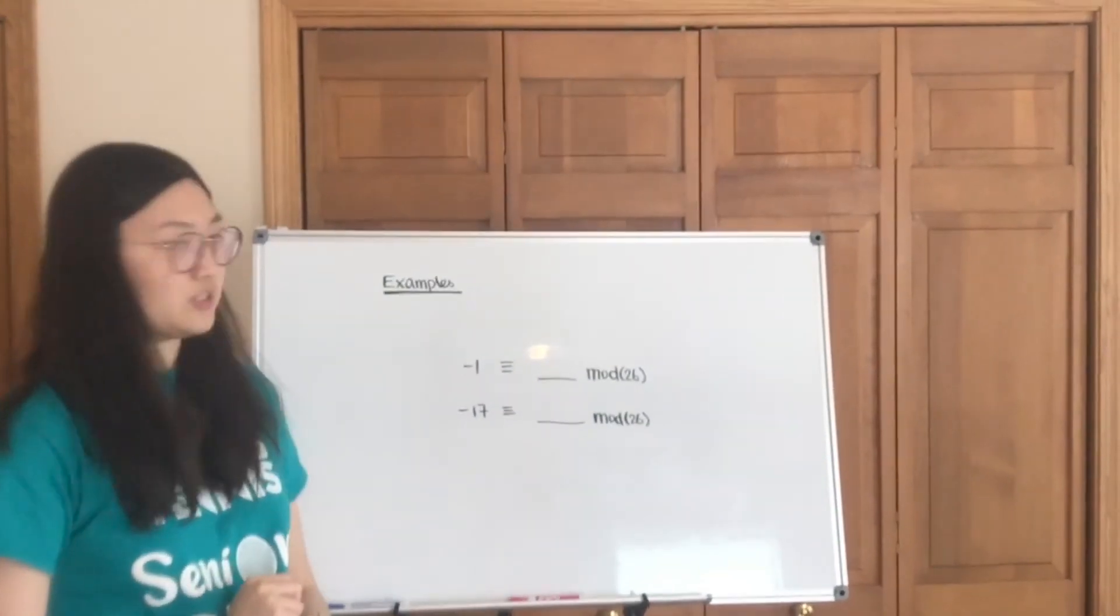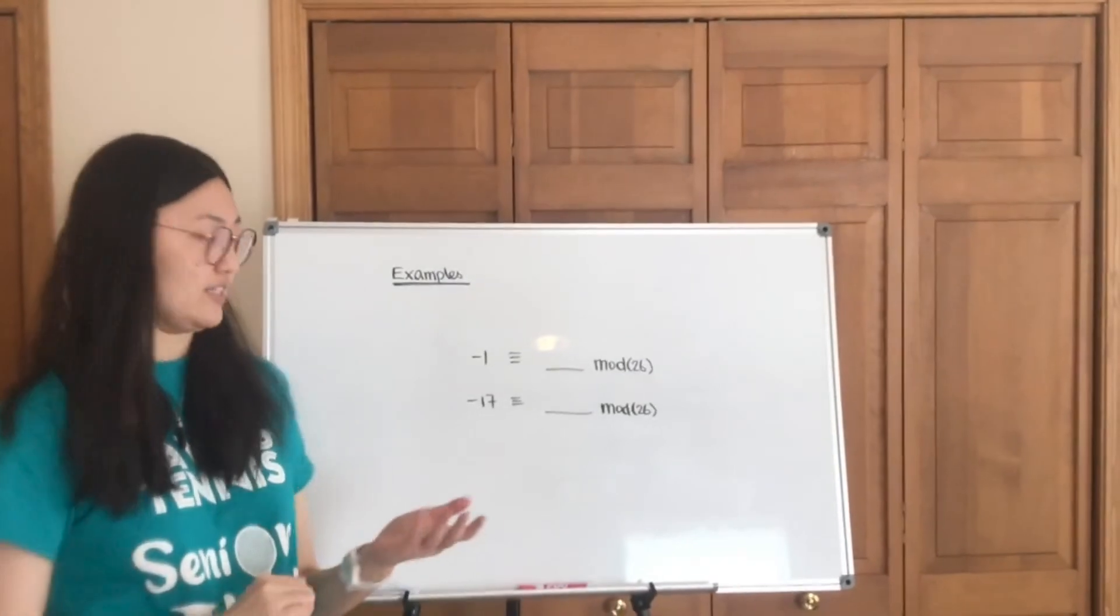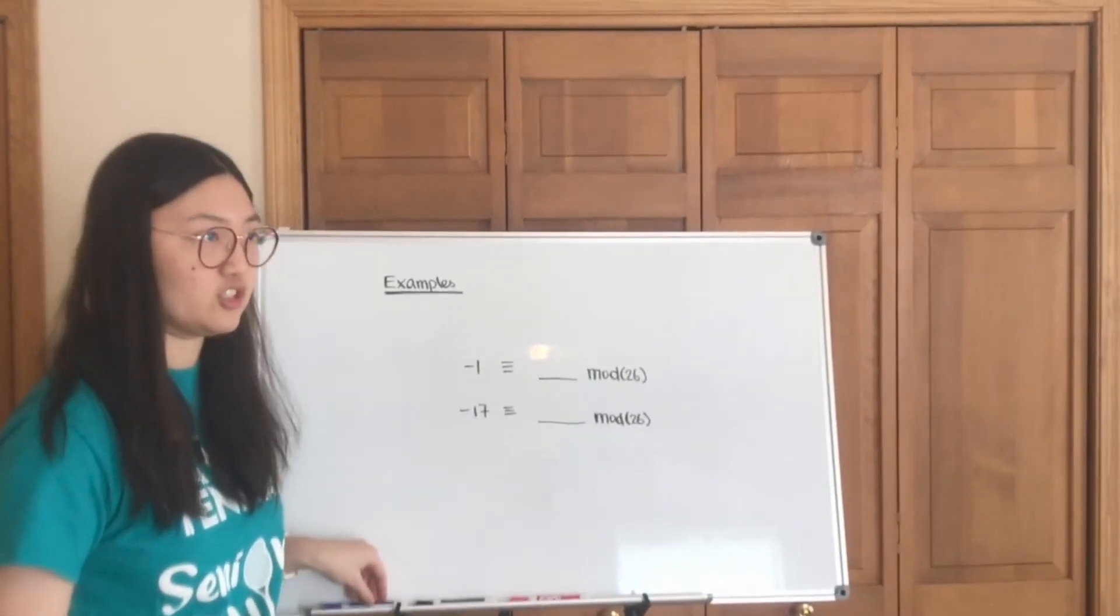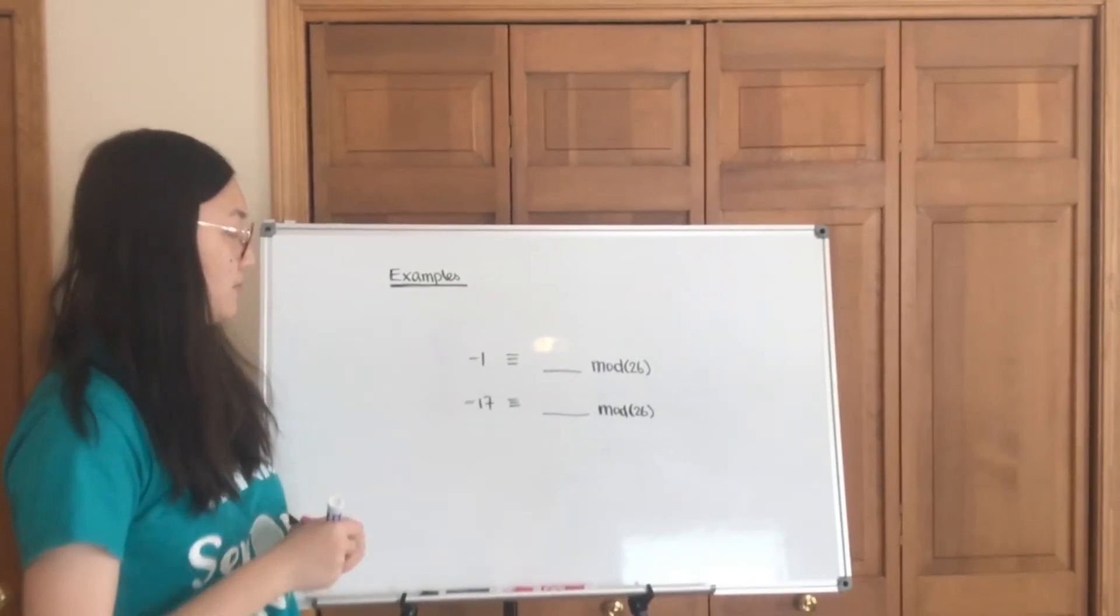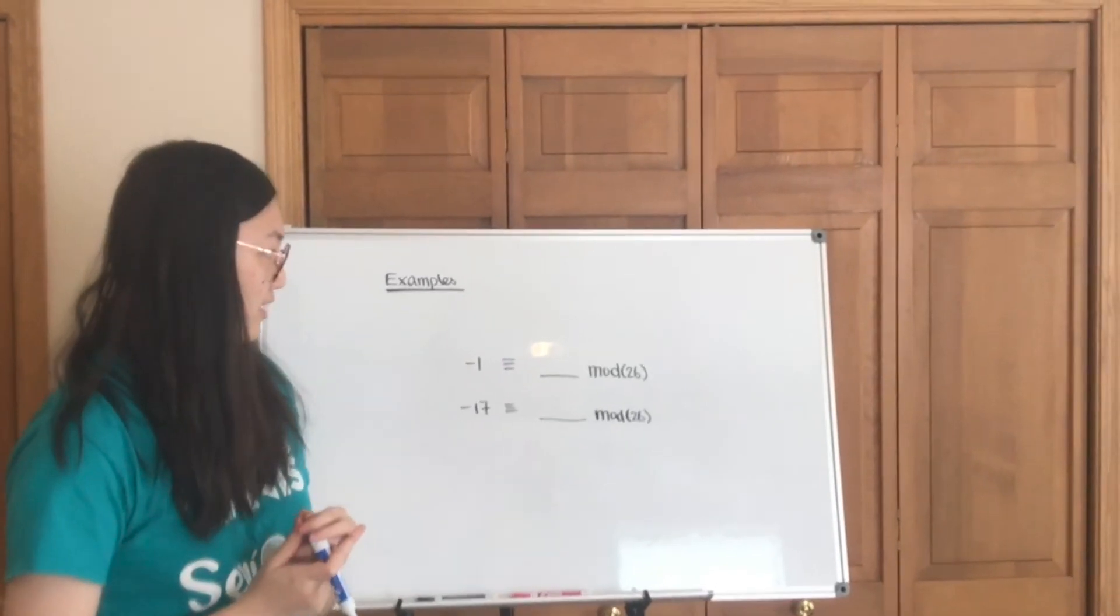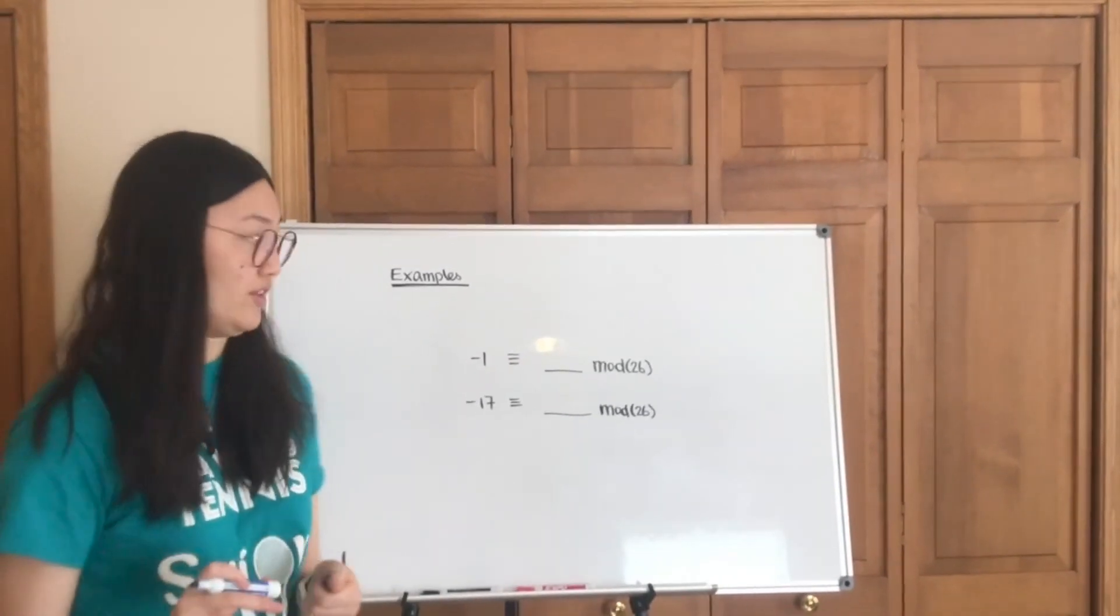You also run into negative numbers, which can also be still changed into mod 26. If you recall from our Caesar video, when we come in touch with negative numbers, we basically add 26 to whatever the number is.